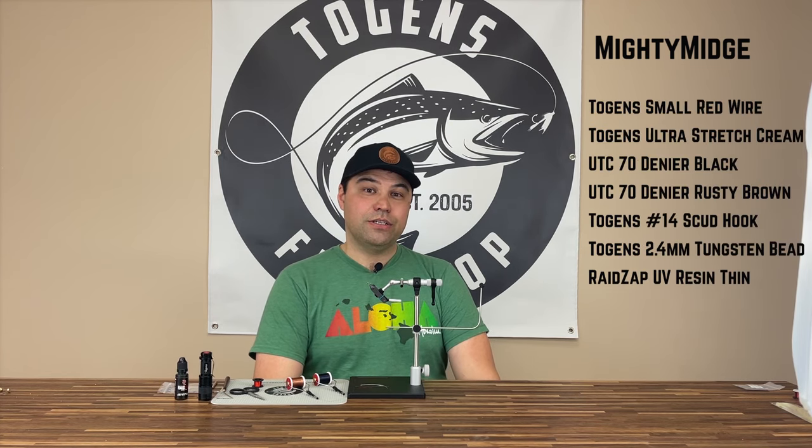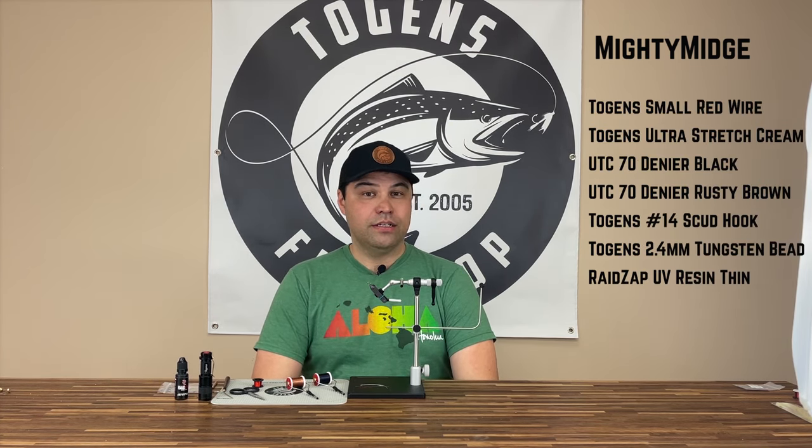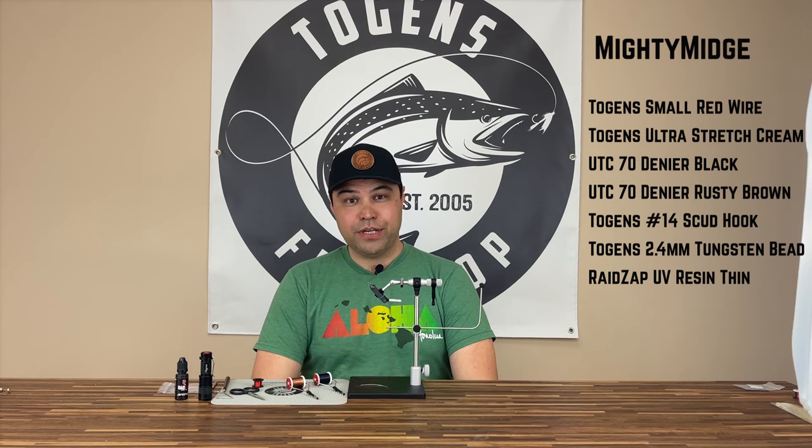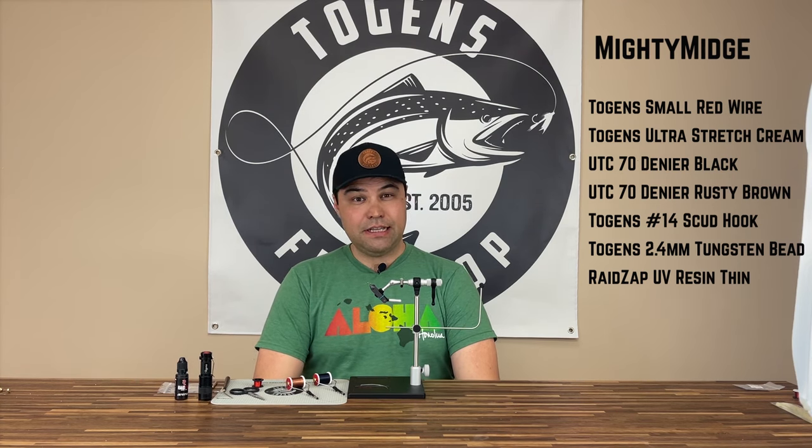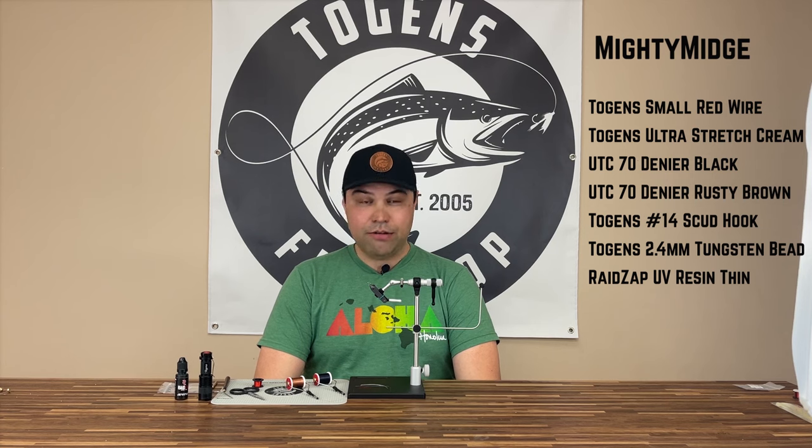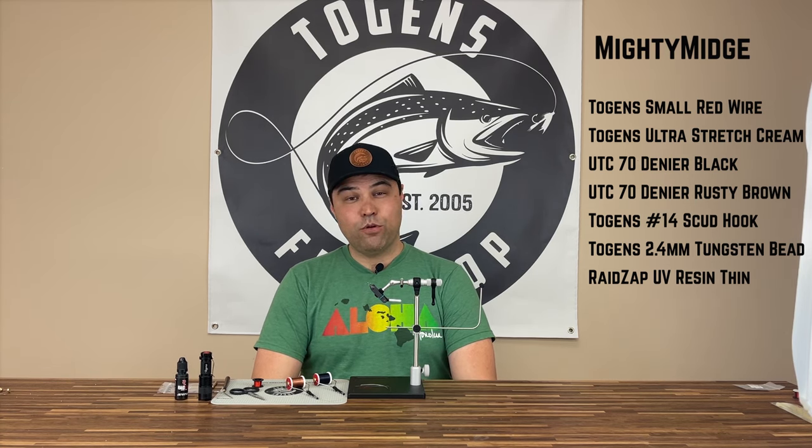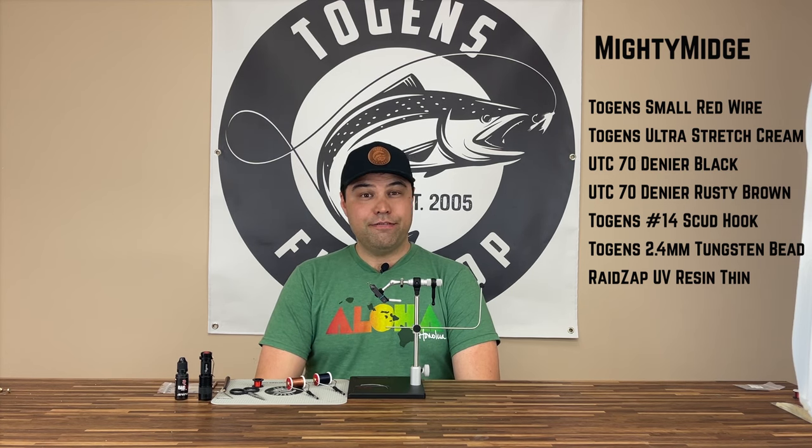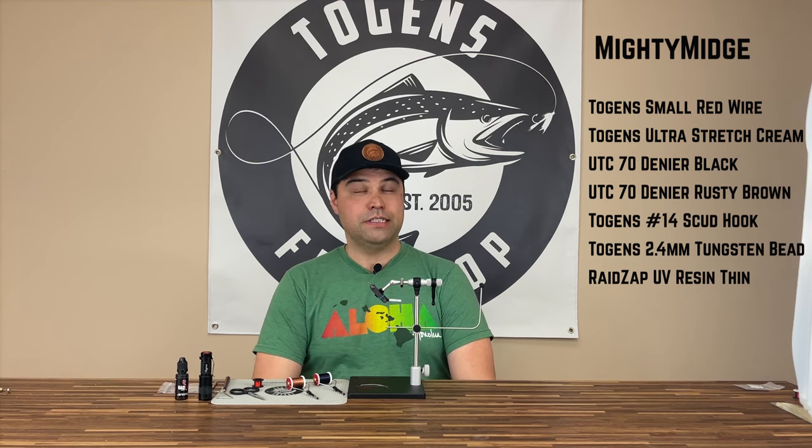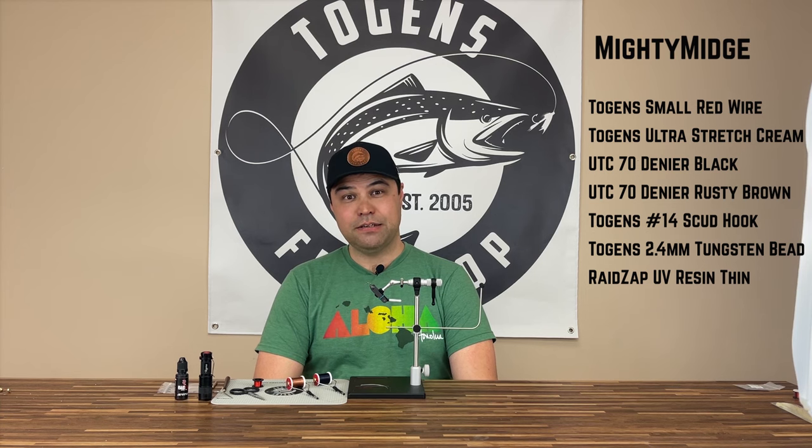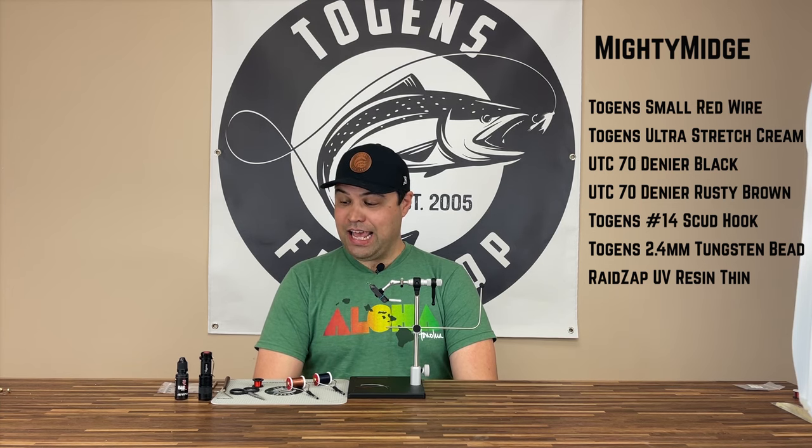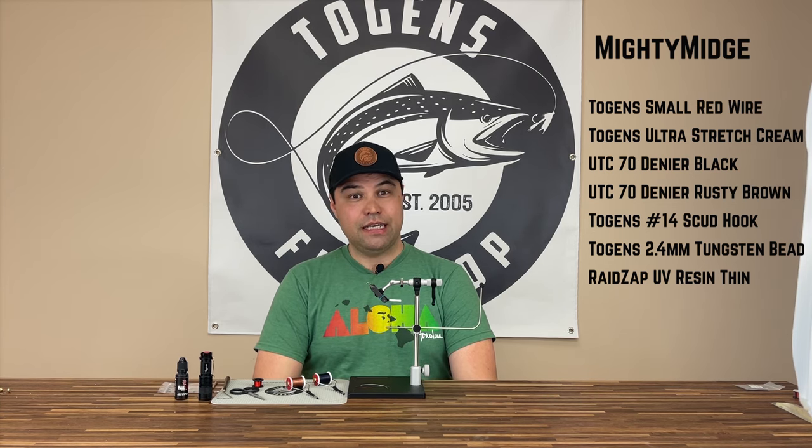Materials we're going to use today are Togan's small red wire, Togan's ultra stretch in cream, black UTC 70, rusty brown UTC 70, a size 14 scud hook, a 2.4 millimeter Togan's black nickel tungsten white tip bead, and RaidZap UV in thin.